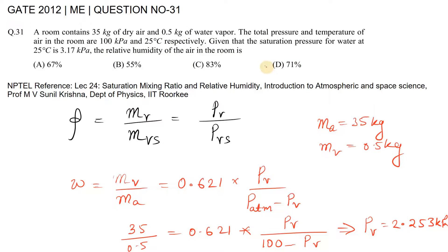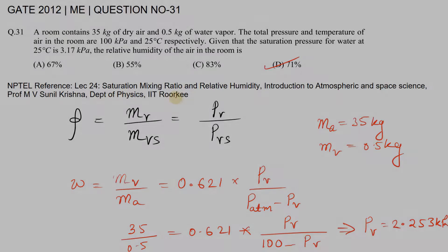For more information, you can refer to NPTEL course lecture number 24, Saturation Mixing Ratio and Relative Humidity, from Introduction to Atmospheric and Space Science by Professor M.V. Sunil Krishna, Department of Physics, IIT Roorkee.